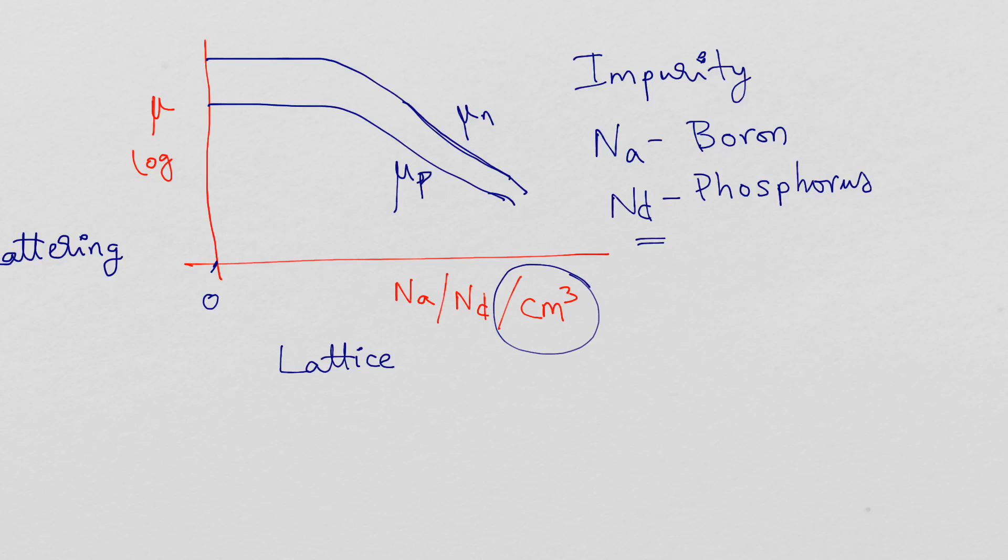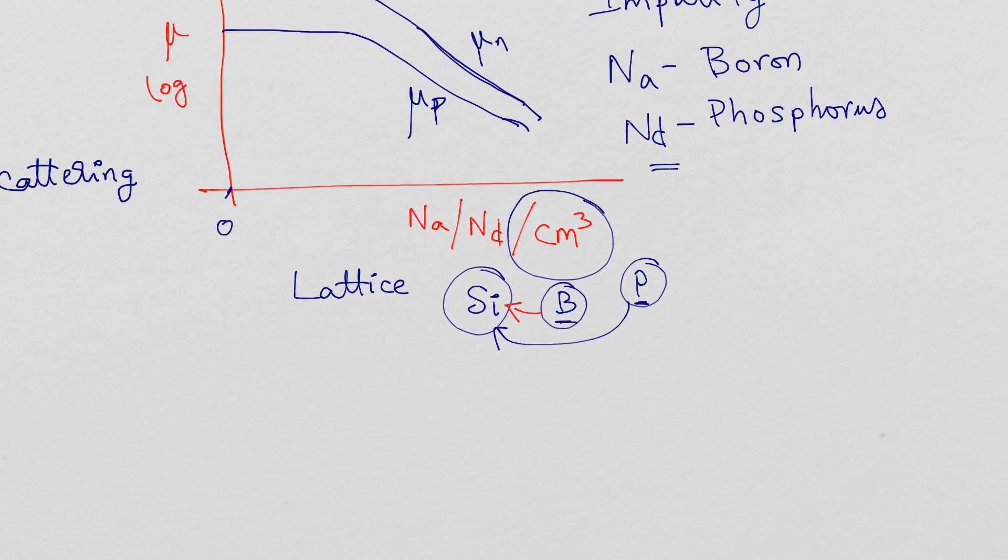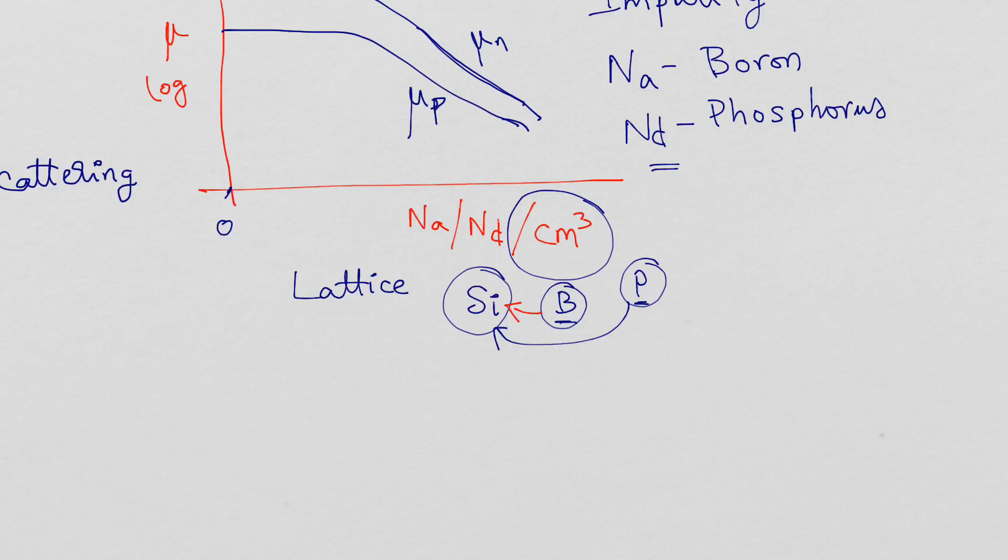The lattice consists of not just Si atoms but boron or phosphorus atoms added to the lattice. The electrons and holes are disturbed by these atoms and the mobility falls.